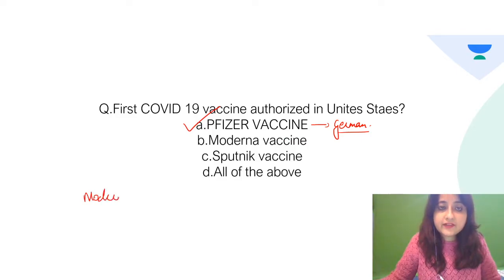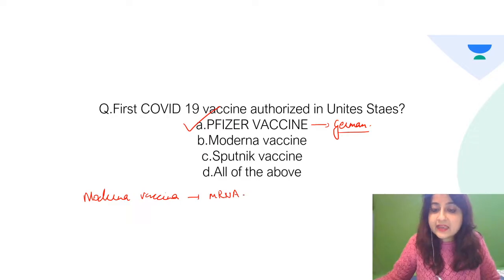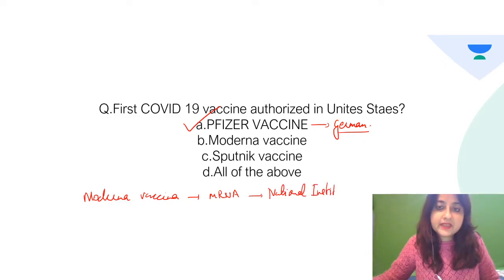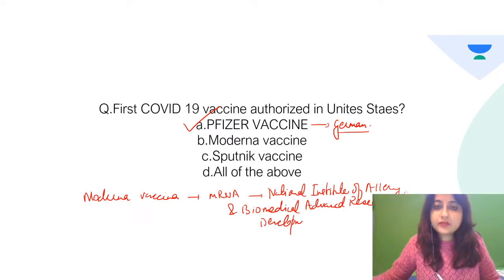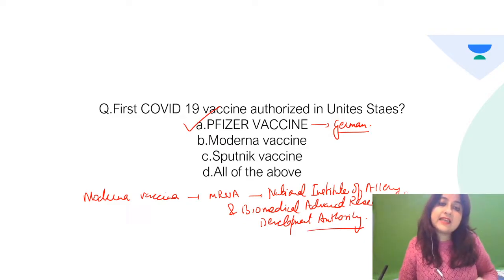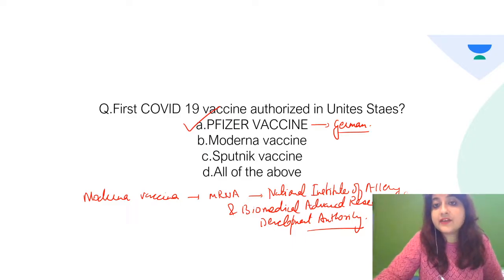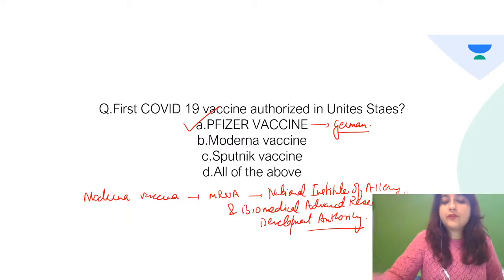Now, what about Moderna? The Moderna vaccine is a messenger RNA (mRNA) vaccine. It was developed by the Biomedical Advanced Research and Development Authority (BARDA). Moderna vaccine is an mRNA vaccine, given at 0.5 ml intramuscularly.